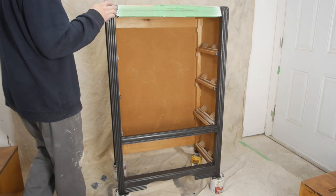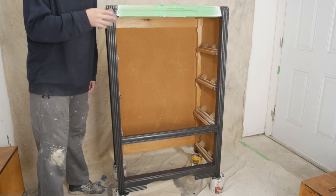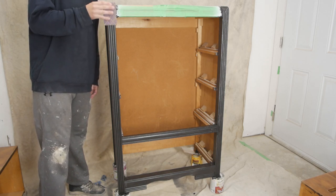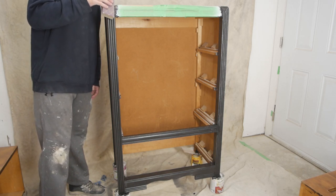We're going to take the sanding sponge 220 and do a light sand throughout. If you see any issues with the paint dripping or any marks, sand it down.